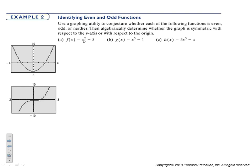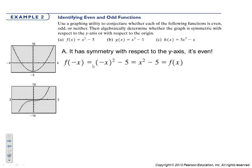If we graph y equals x squared minus 5, we get a nice parabola, and just by looking at it we say it is even because of the symmetry with the y-axis. Then we plug negative x into our equation — we square it so it becomes x squared — which is the same as the original function, so we prove with algebra that it's even.